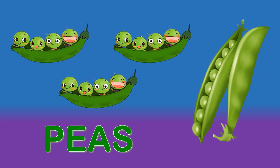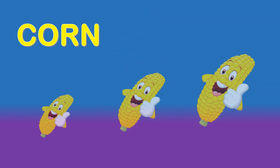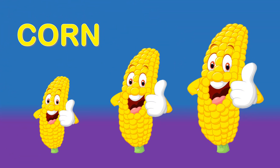Peas. P-E-A-S. Peas is a green vegetable. Corn. C-O-R-N. Corn comes in yellow color.